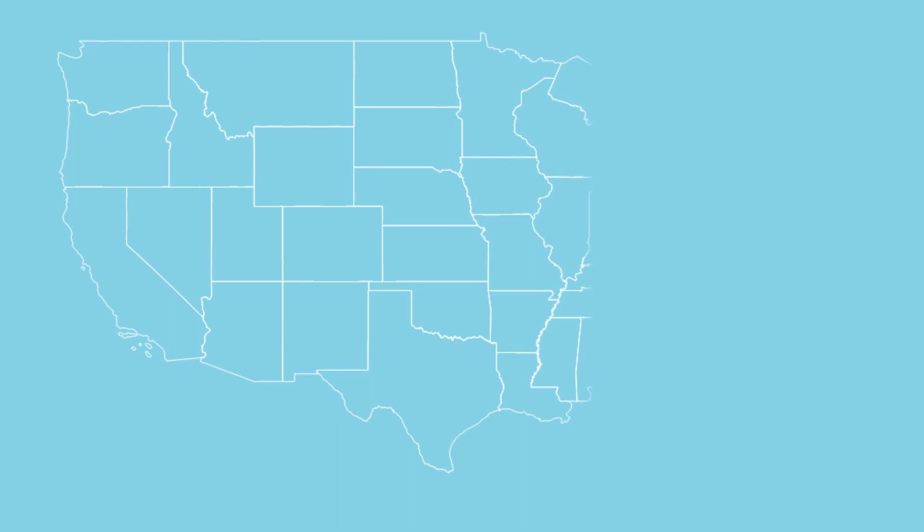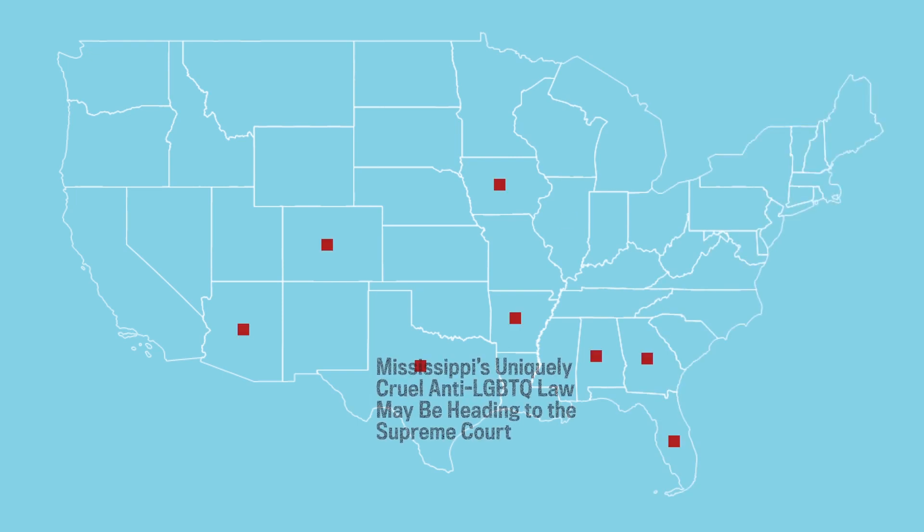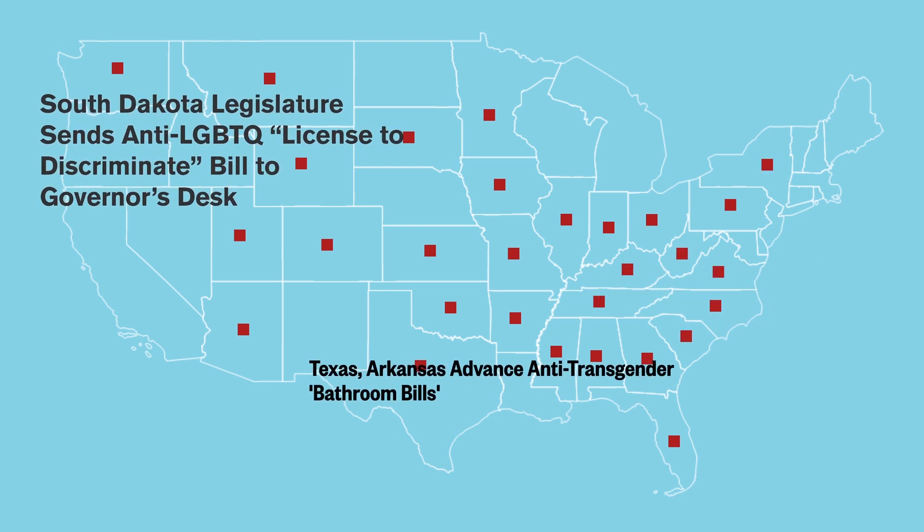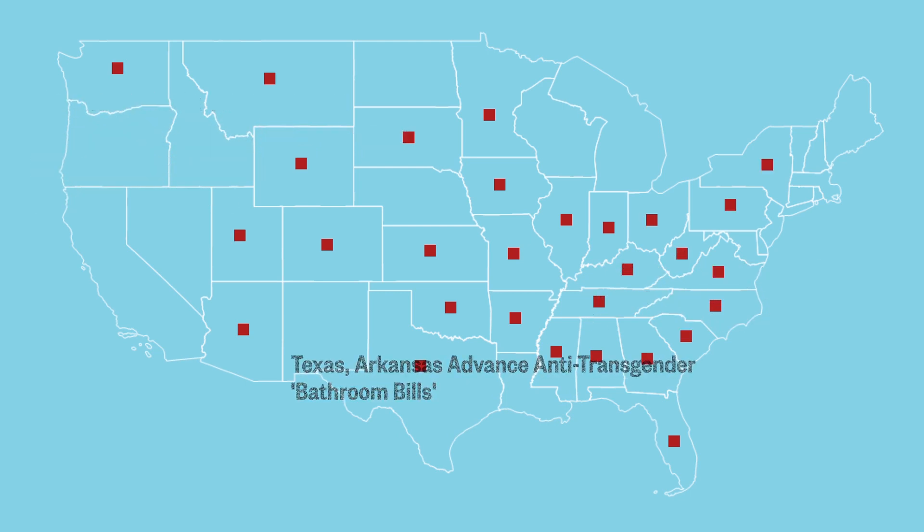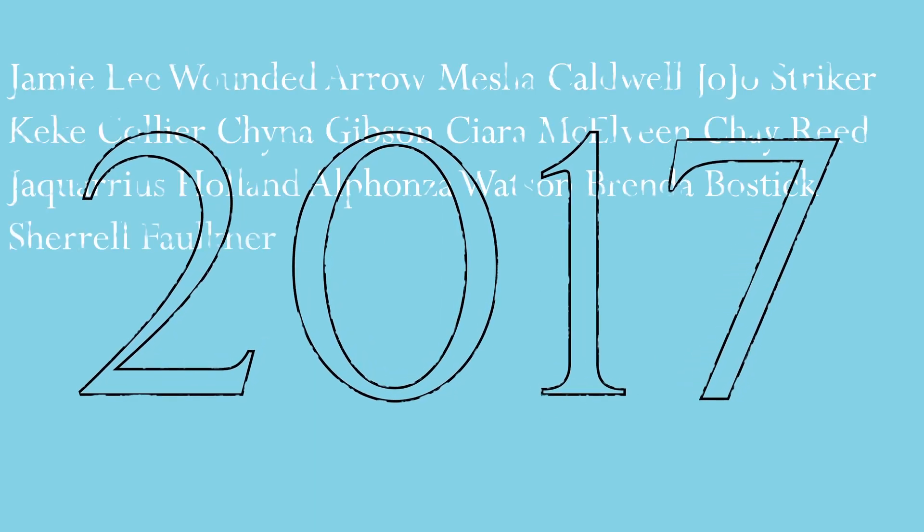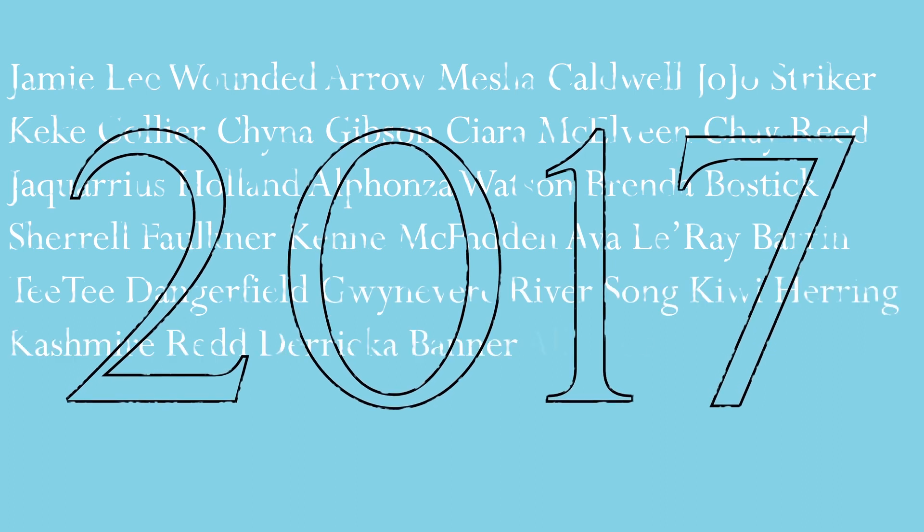We've witnessed more than 130 anti-LGBTQ bills introduced in 30 states in 2017, many of those bills targeting transgender youth in particular. We've witnessed an increase in hate-based violence. 2017 was actually the deadliest year on record for the transgender community.